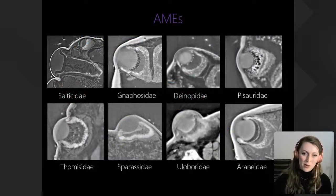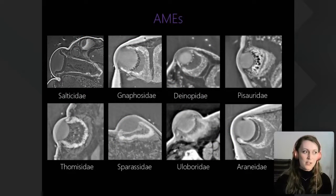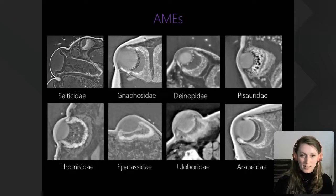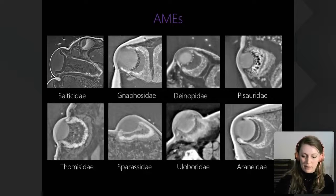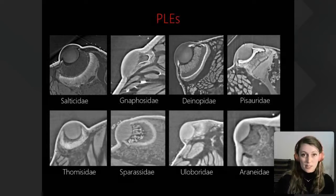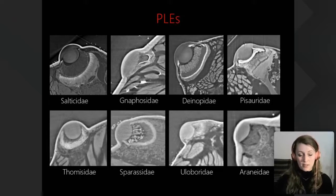The variation we see across all these structures is enormous. Principal eyes from eight completely different spider families show a huge range of morphology in shape, size, retina position, and apparent resolution. The same diversity is true for posterior lateral secondary eyes — we see enormous differences across all these different families.